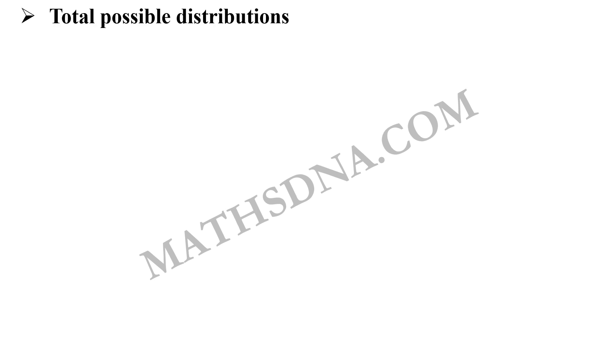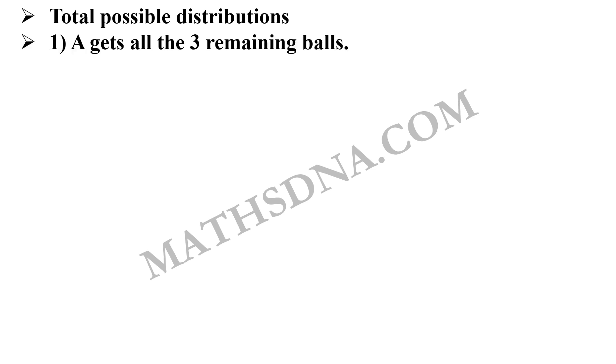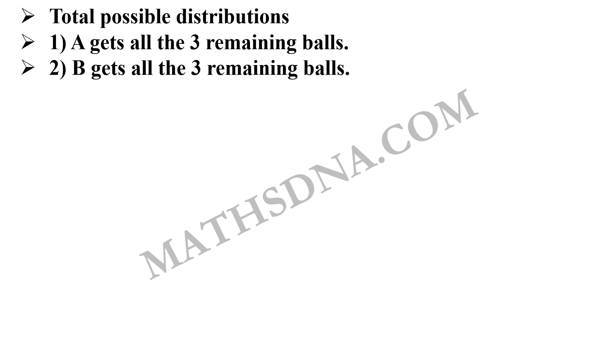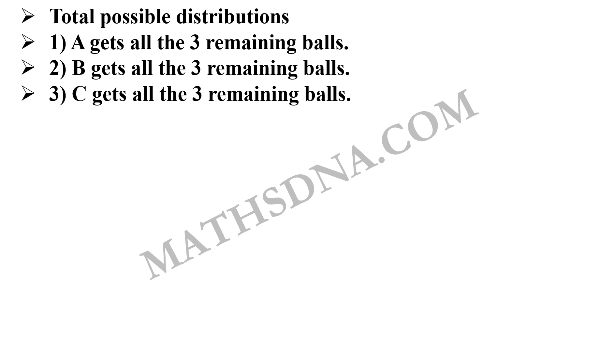For your convenience, I am writing all the possible cases for the distribution. In the exam, you don't need to write all — you can just calculate it in a rough state. The first case: when A gets all the 3 remaining balls. As there are total 3 members, the second case will be when B gets all the 3 remaining balls. And the third case will be when C gets all the 3 remaining balls.